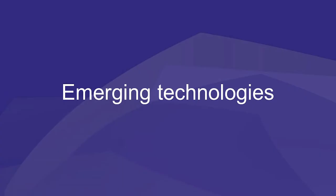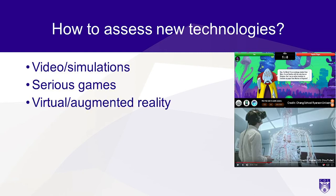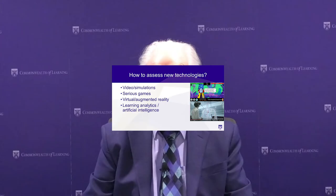We also need to assess new and emerging technologies. I'm going to give four examples of new technologies not yet in widespread use in education but with massive potential: video and simulations, serious games, virtual and augmented reality, and learning analytics and artificial intelligence. For each I'll define it, give examples, and talk about the affordances — the strengths and weaknesses — for teaching and learning.